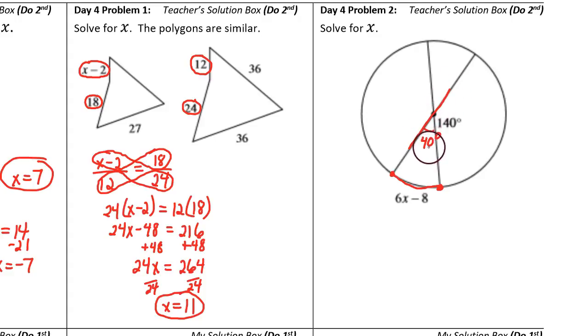If the central angle is 40, then so is the minor arc. So we can write 6x minus 8 equals 40 degrees. Add 8 to both sides to make 48, and then divide by 6. We get x equals 8.